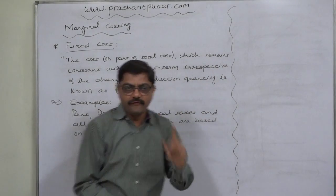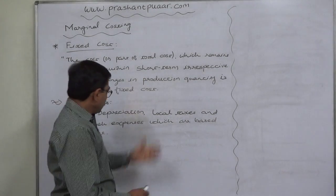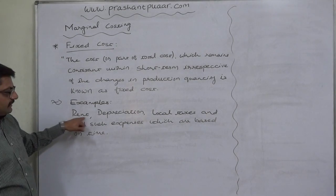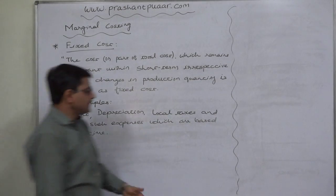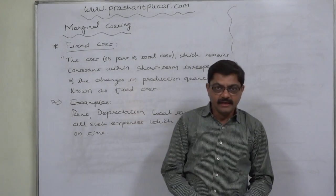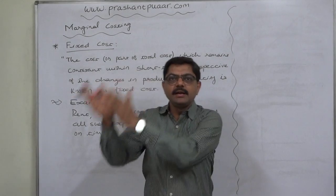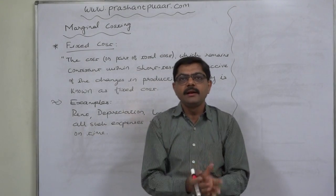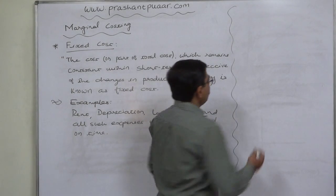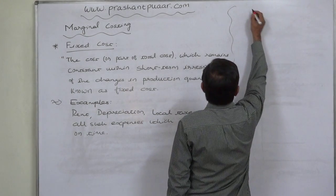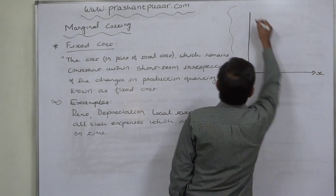So the average per-unit amount of fixed cost doesn't remain constant, but the total amount of fixed cost remains constant. Examples include rent, depreciation, local taxes, and all such expenses which are based on time. The amount of such cost is dependent on time and not on the level or quantity of production. If we present fixed cost through a graph, it can be illustrated as follows.